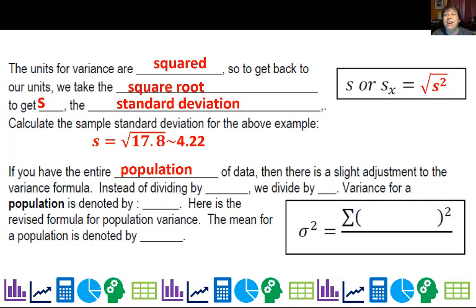Now, if you actually have the entire population of data, so you have every single data point available, you do a slight adjustment because then you don't have to worry about variability of sampling. And instead of dividing by n minus one, we just divide by n.